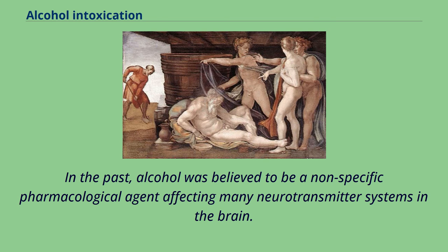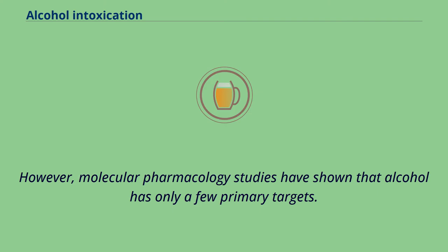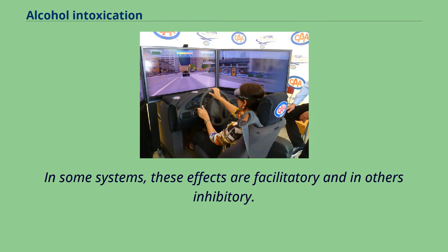In the past, alcohol was believed to be a nonspecific pharmacological agent affecting many neurotransmitter systems in the brain. However, molecular pharmacology studies have shown that alcohol has only a few primary targets. In some systems, these effects are facilitatory and in others inhibitory.